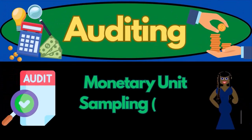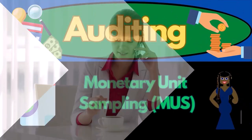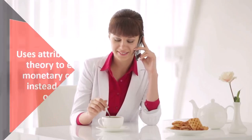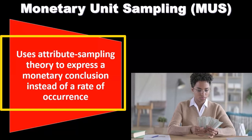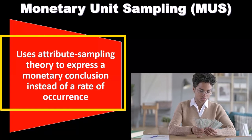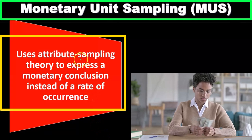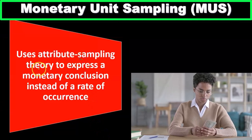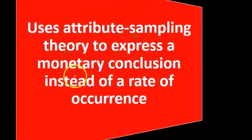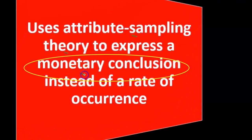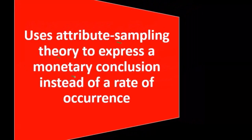In this presentation, we will discuss monetary unit sampling, or MUS. Monetary unit sampling uses attribute sampling theory to express a monetary conclusion instead of a rate of occurrence. We're going to be using attribute sampling theories, but now we're going to express monetary conclusions — basically dollar amount conclusions — instead of a rate of occurrence.